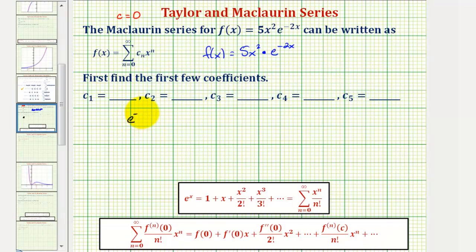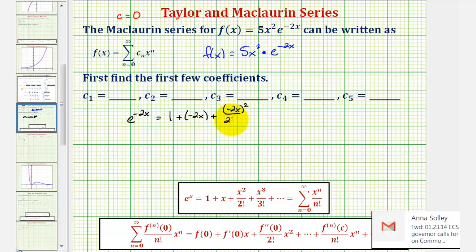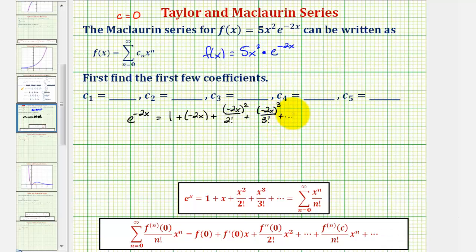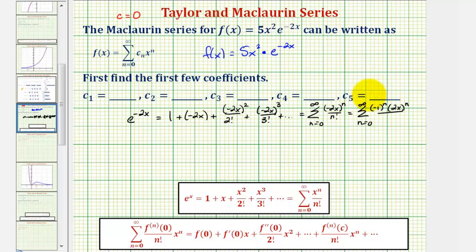So e to the power of negative 2x equals 1 plus negative 2x, plus (negative 2x)² divided by 2 factorial, plus (negative 2x)³ divided by 3 factorial, and so on. In summation notation this equals the sum from n=0 to infinity of (negative 2x)^n divided by n factorial, which we can rewrite by factoring out as the sum of (negative 1)^n times 2^n times x^n, divided by n factorial.